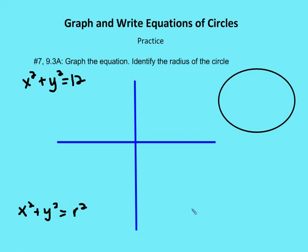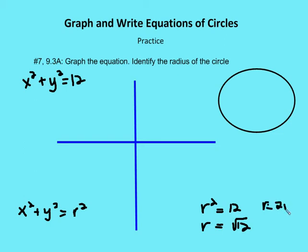We can find out what the radius is by setting r-squared equal to 12 and then solving for r. So r will be the square root of 12, or r is equal to 2 root 3, which is roughly 3.